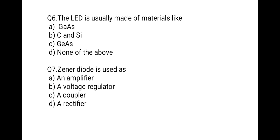The next question: the LED is usually made of material like — first gallium arsenide, second carbon and silicon, third germanium arsenide, last none of the above.